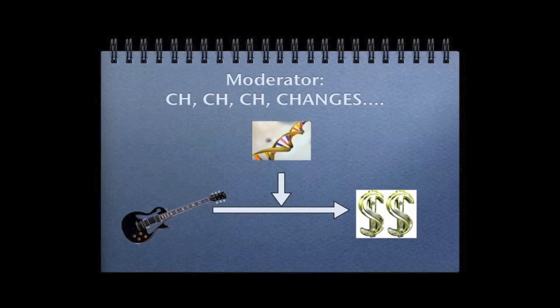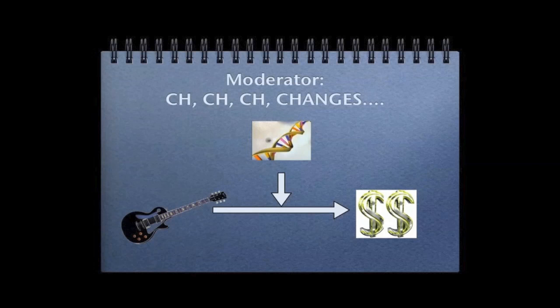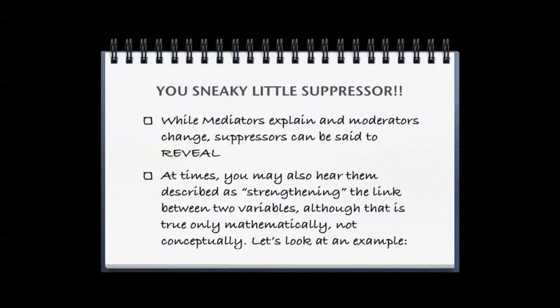So, not to belabor this point, but it's important, so I'm gonna. Moderator: good genes changes the course of what happens as a result of getting the guitar. Mediator: practice is what happens as a result of getting the guitar, and shows why getting the guitar leads to something else, like the record deal.